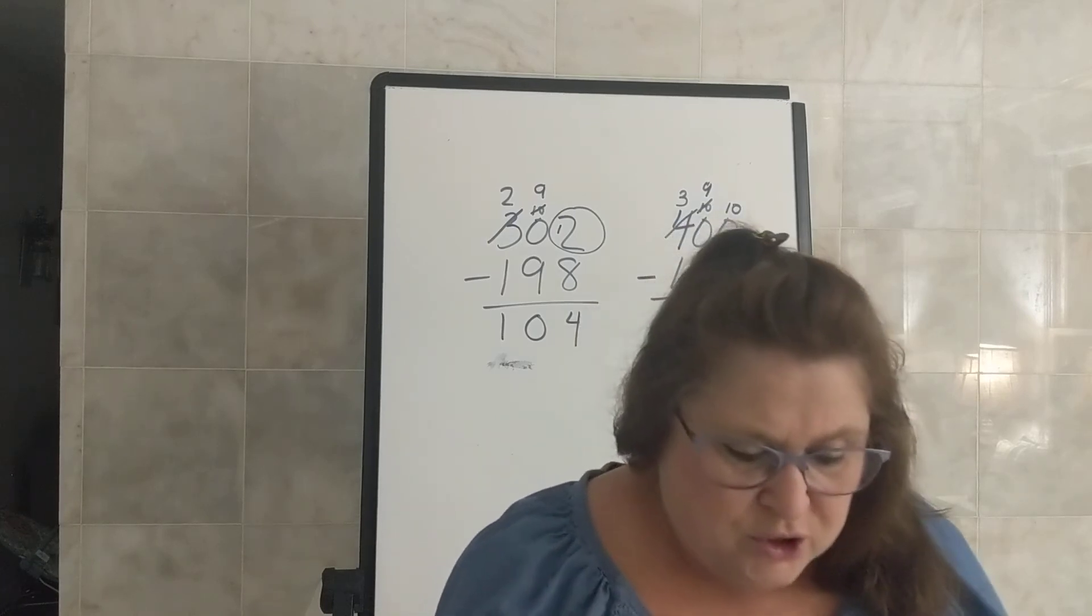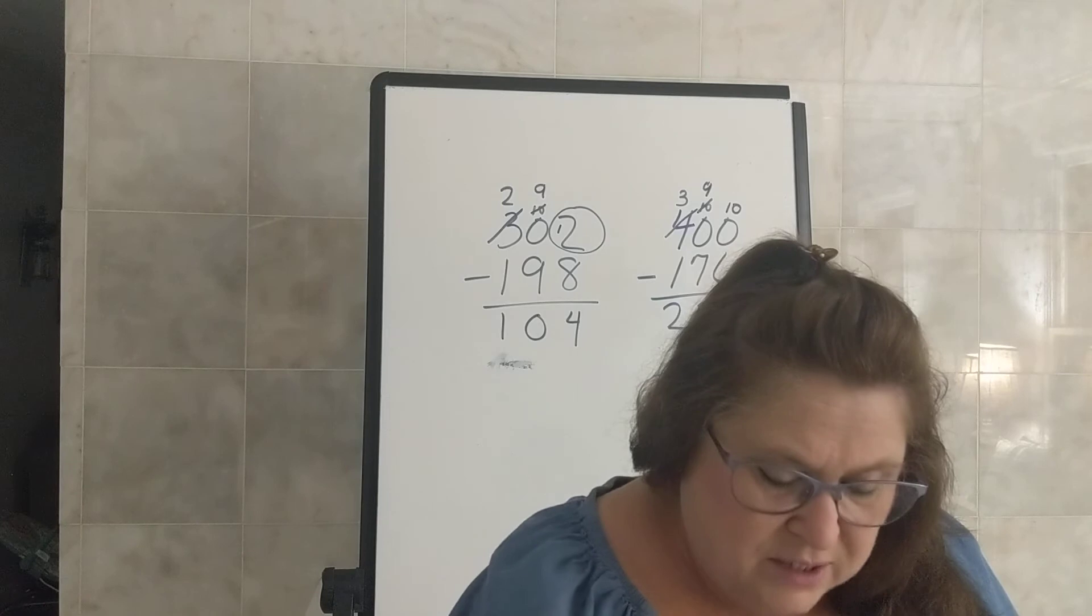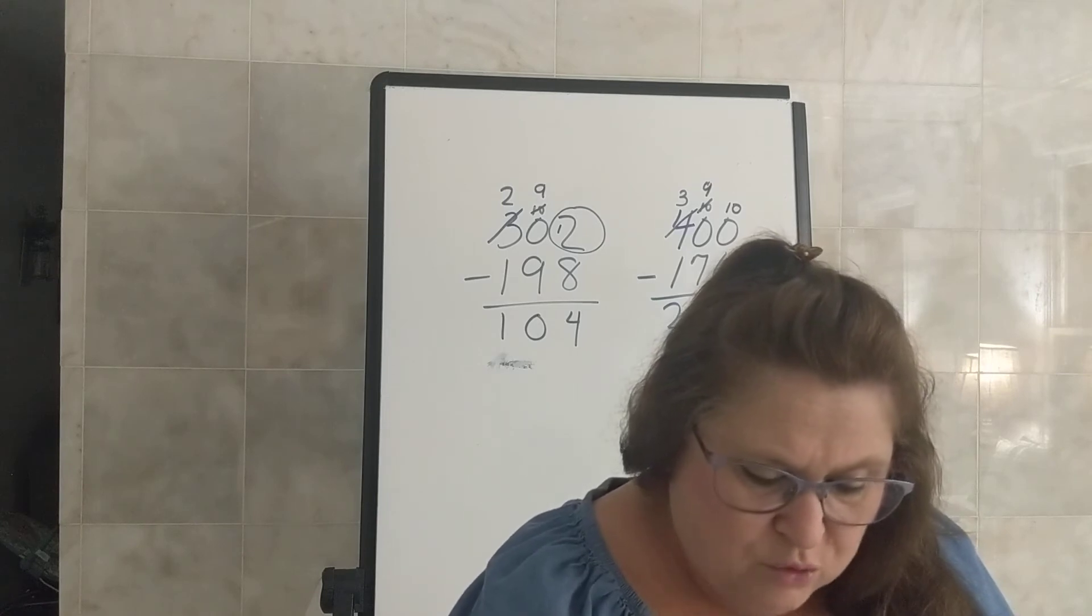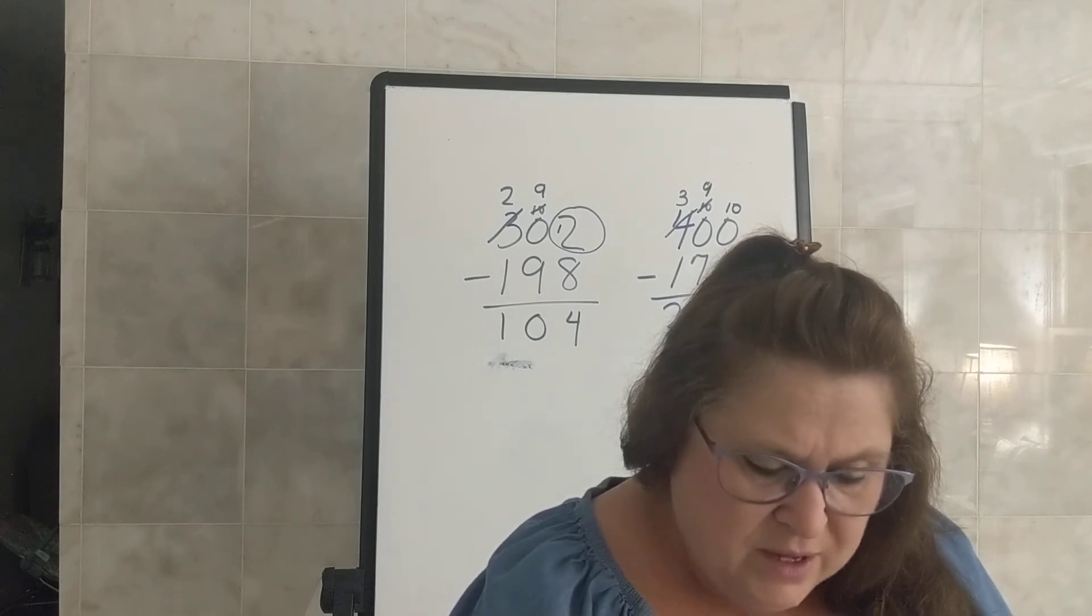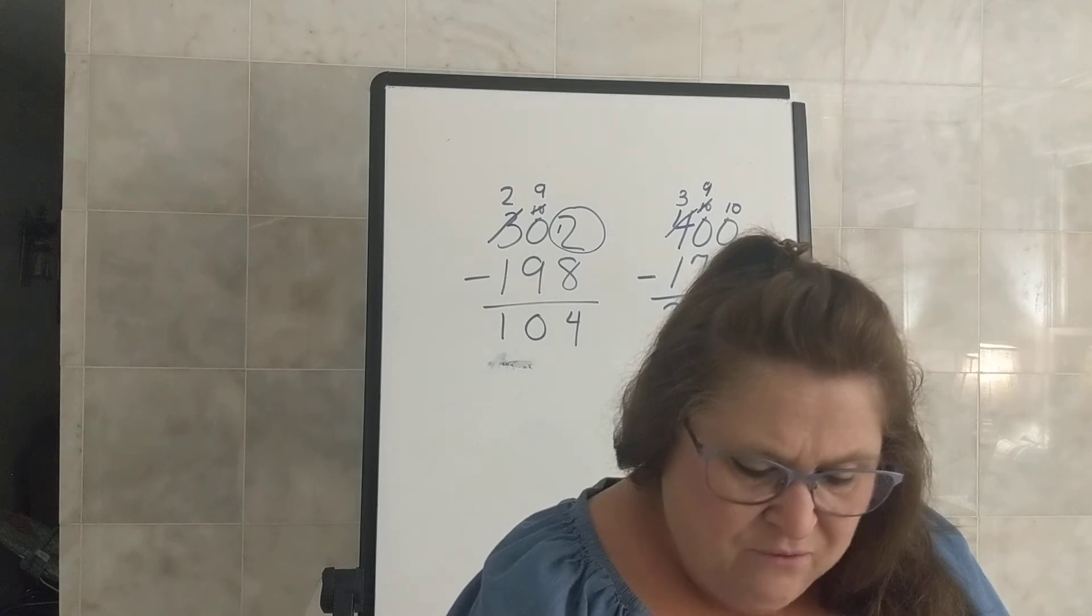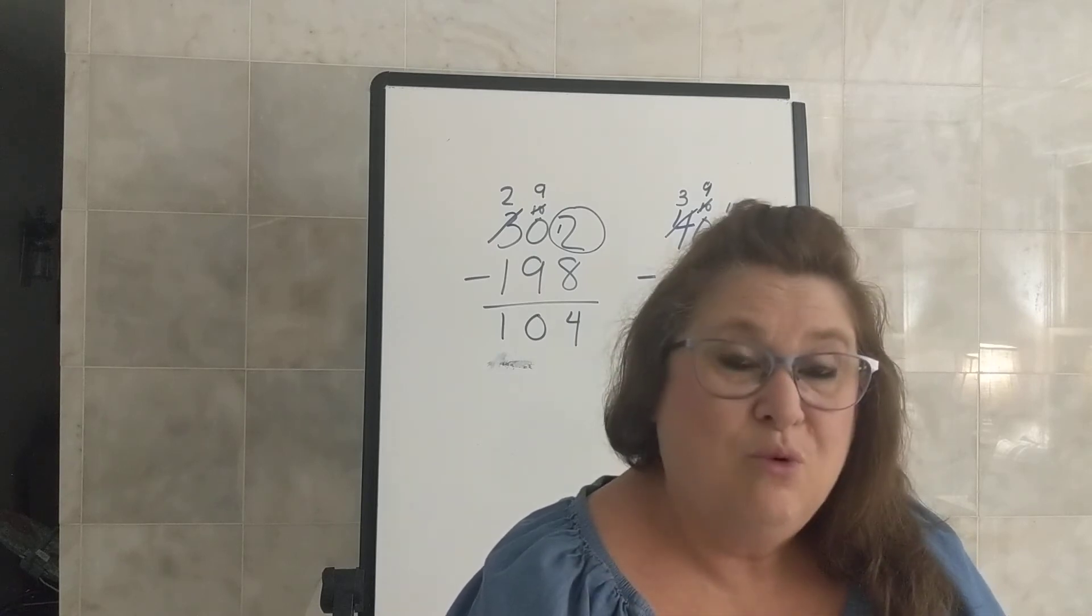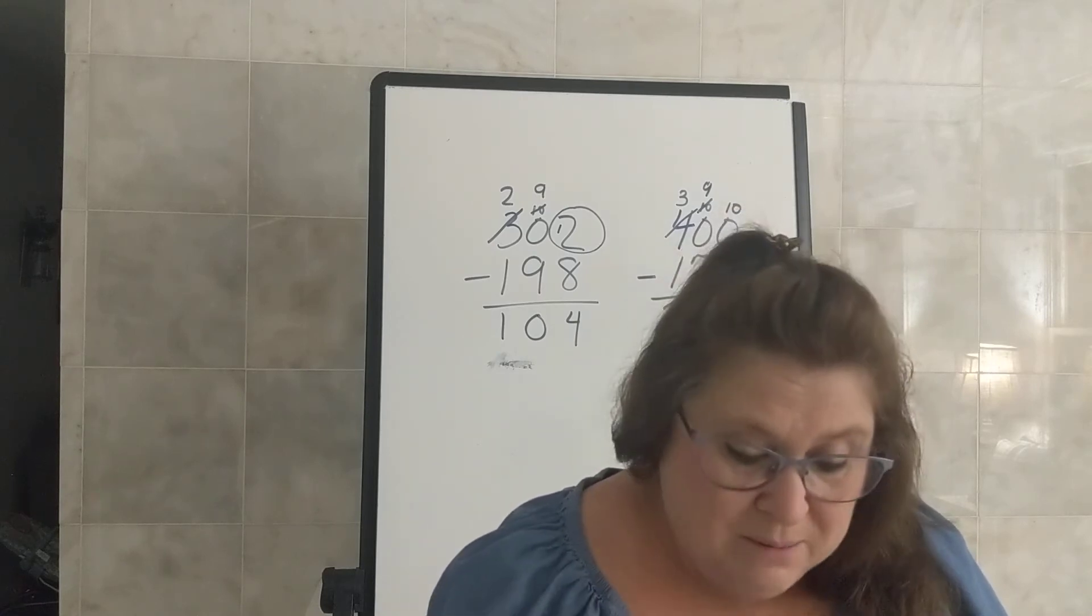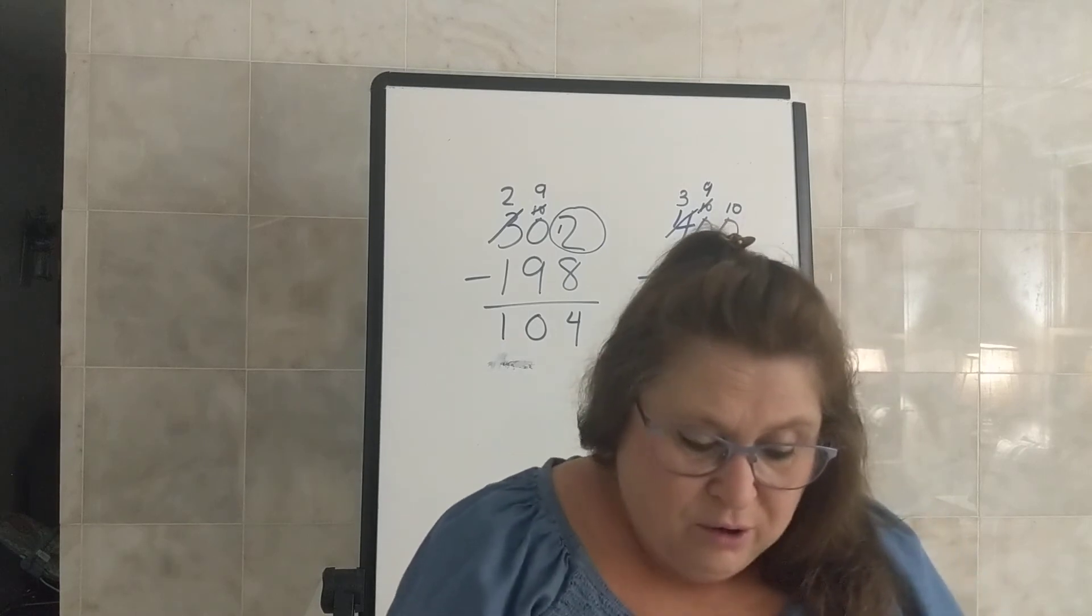So put your finger on your two and start counting by fives until you get to 4:25. 5, 10, 15, 20. So it took her 20 minutes to walk her dog.